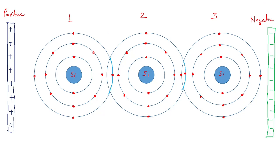At room temperature, we know that a few valence electrons can become free electrons — they leave the parent atom because they are loosely attached. For example, a valence electron in the outer orbit of the first atom becomes free at room temperature and comes out, becoming a free electron.